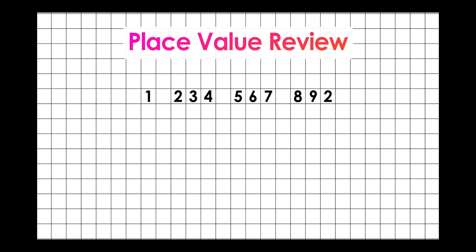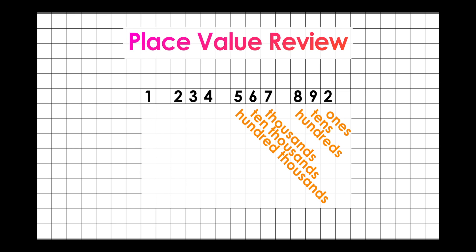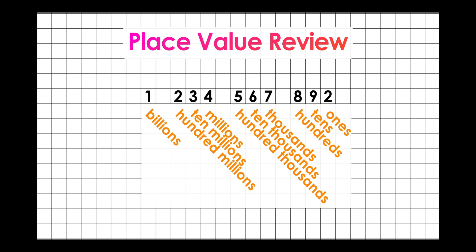In this number, 2 is in the ones place, 9 is in the tens, 8 is in the hundreds, 7 is in the thousands place, 6 is in the ten thousands, 5 is in the hundred thousands, 4 is in the millions place, 3 in the ten millions, 2 in the hundred millions, and 1 in the billions place.